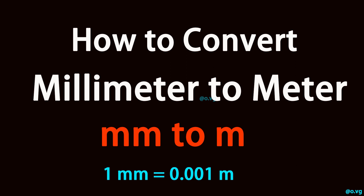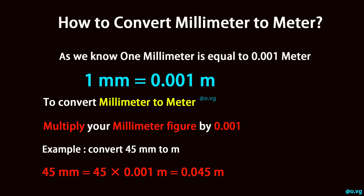How to convert millimeter to meter. As we know, 1 millimeter is equal to 0.001 meter. To convert millimeter to meter, multiply your millimeter figure by 0.001.